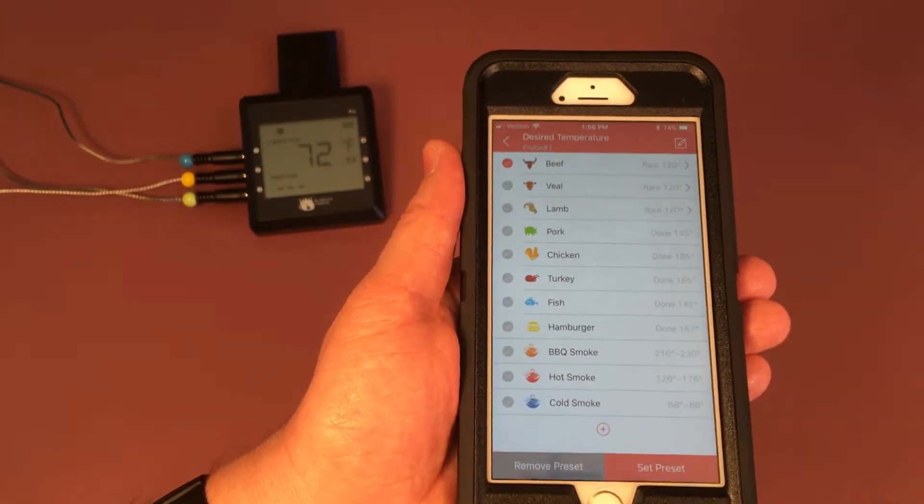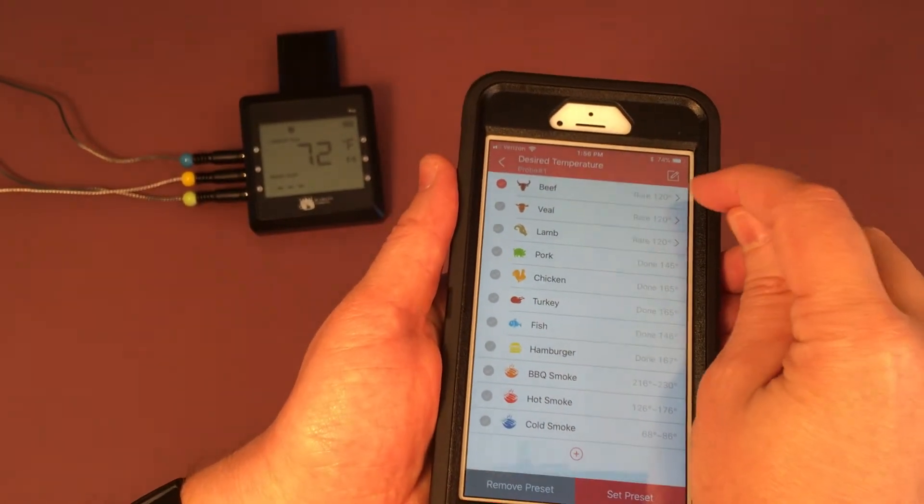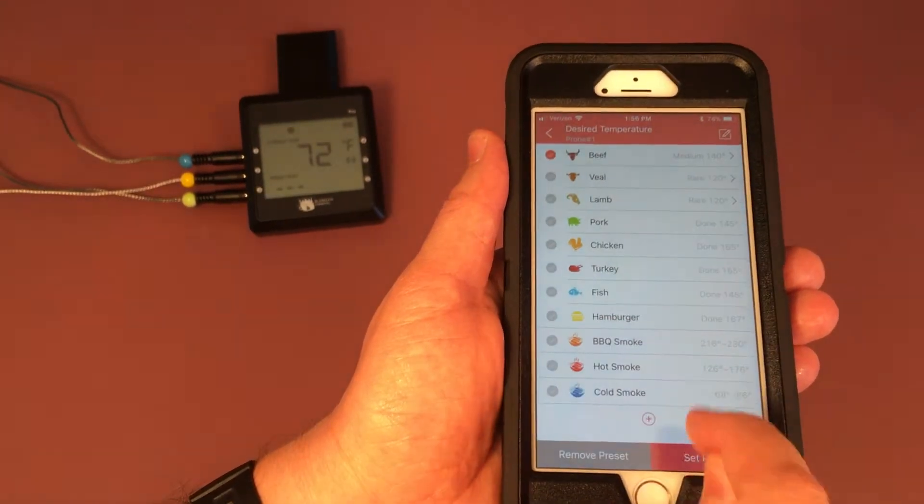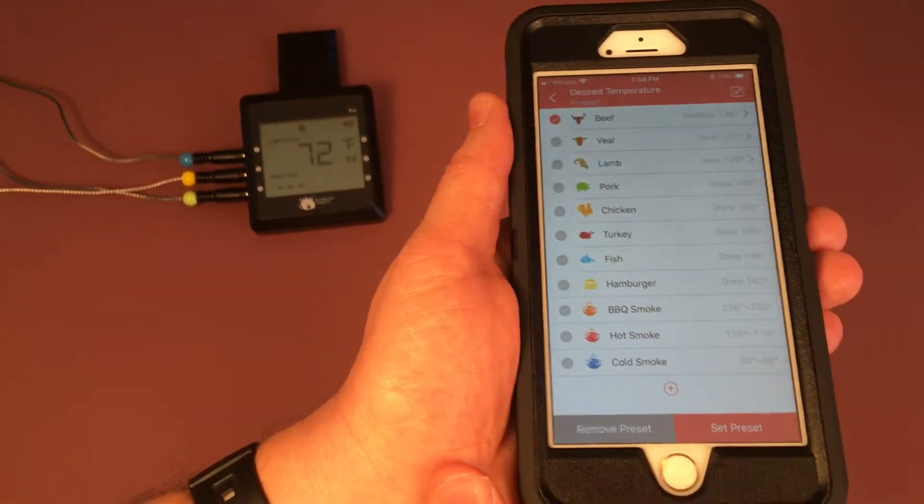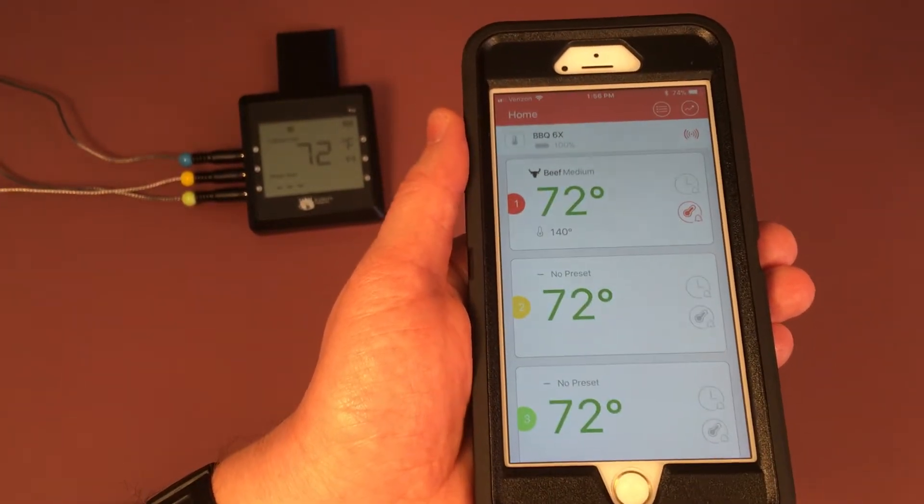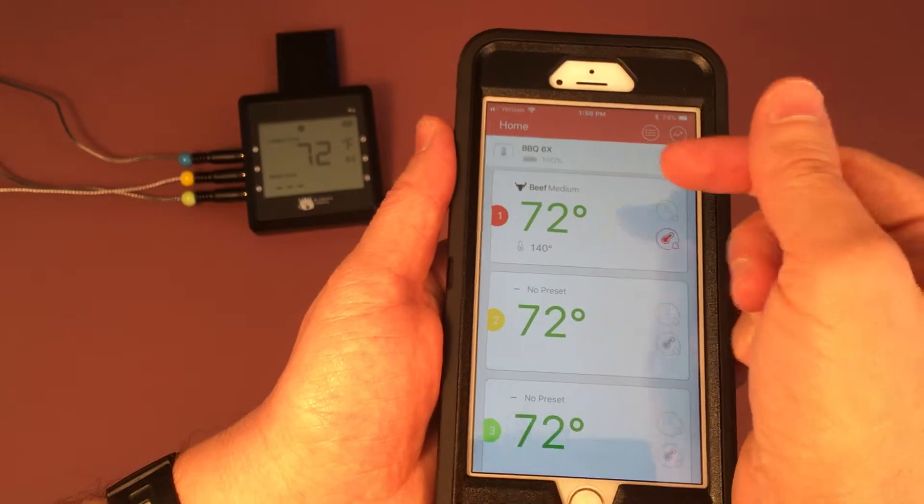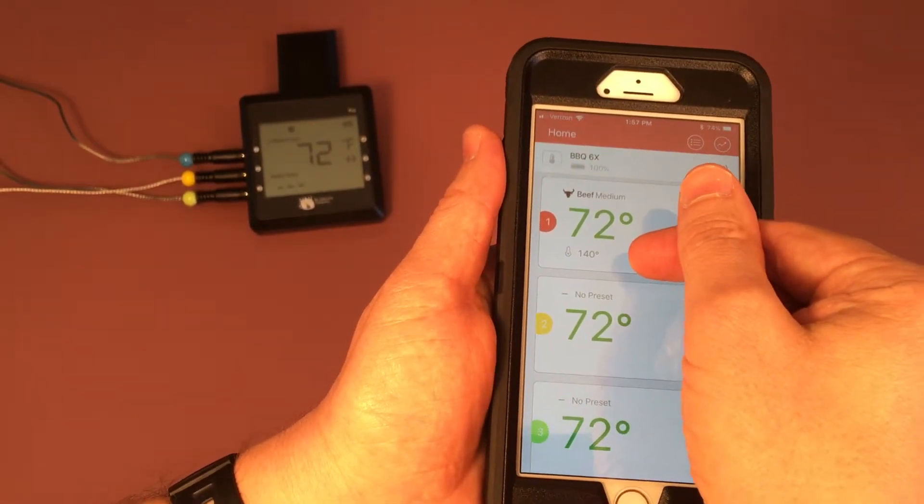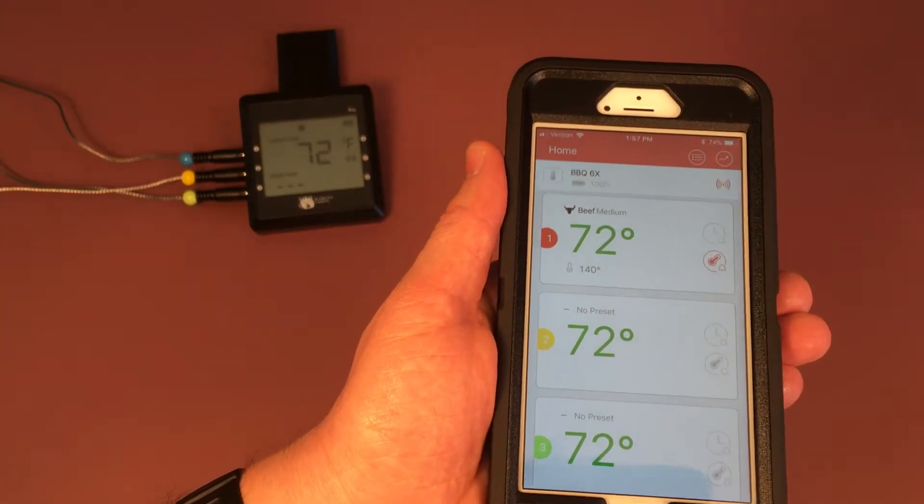So we're going to go ahead and set this first preset for our first probe. We are going to choose medium here for the beef. To save that, we want to hit set preset, and here you'll see the name of the preset beef medium and the preset temperature of 140 degrees Fahrenheit.